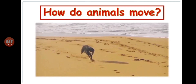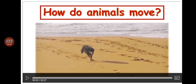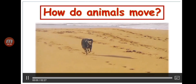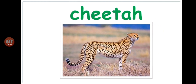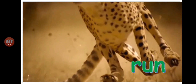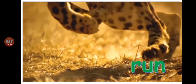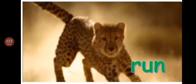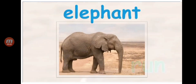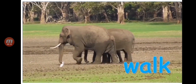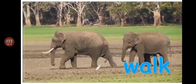How do animals move? Let's watch a video clip about how animals move. First is the cheetah — the cheetah is the fastest animal in the world; they can run very fast! Second is the elephant — elephants move by walking.